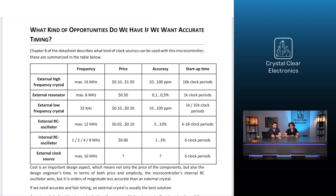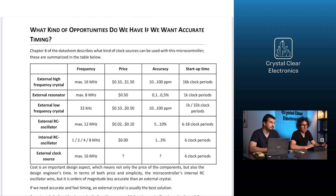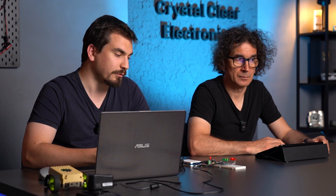Let's see what options we have if we want to time something precisely. Chapter 8 of the datasheet describes what kind of clock sources can be used with this microcontroller. Browsing the table, you can see how cheap alternatives exist for applications depending on the clock source. The main reason for not always using cheap solutions is that we have to consider not only the material cost but also the production costs — more components will take longer to assemble, and the design of extra components requires more engineering work, which also has a cost.